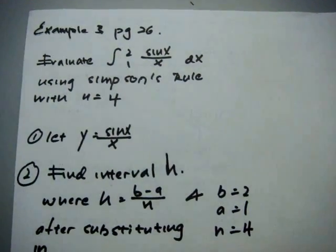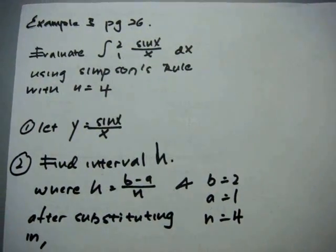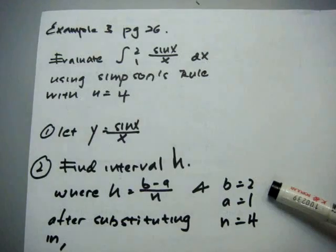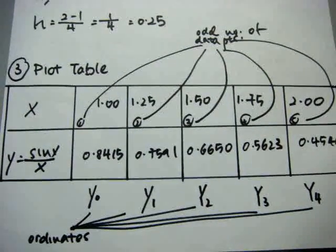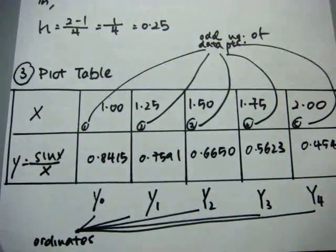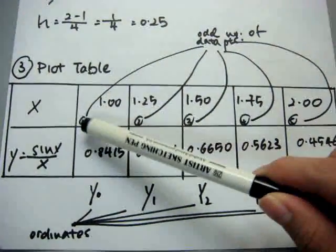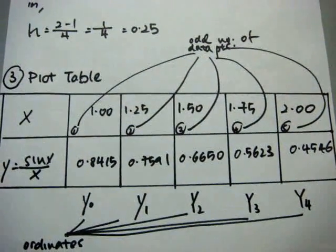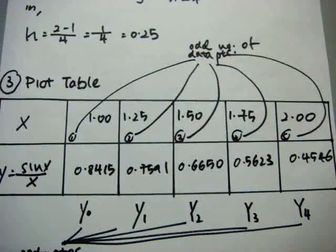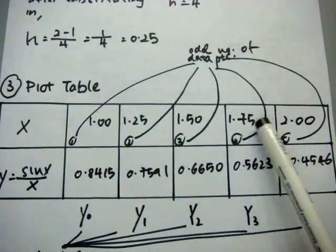Then, we proceed on to find interval h, where h equals b minus a over n. And as you can see, b equals 2, a equals 1, and n equals 4. Then I proceed on to plot the table with x and y equals sin x. As you can see, the first and the second points interval is 0.25 as well as the others.